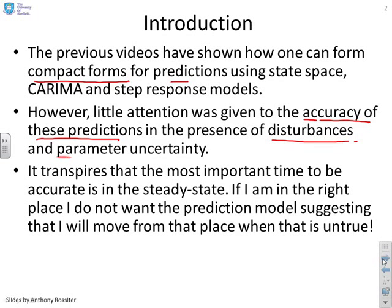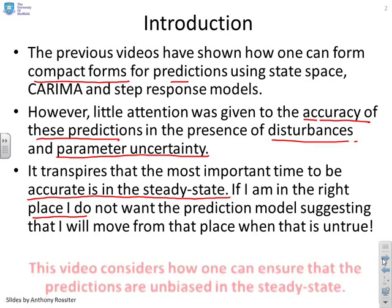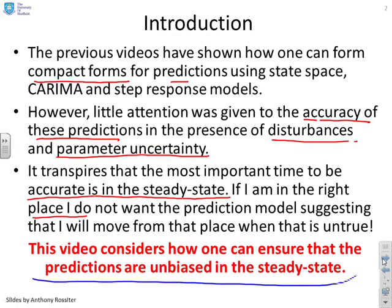It transpires that when you're doing predictive control, the most important time to be accurate is in the steady state. Transient errors aren't unimportant, but if I'm already in the right steady state, I don't want the prediction model telling me that I'm going to move from that place, because clearly that cannot be true. This video looks at how we can ensure predictions are unbiased in the steady state, meaning the predictions predict that you stay in that steady state.